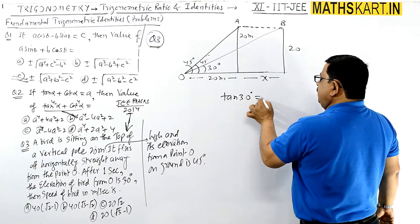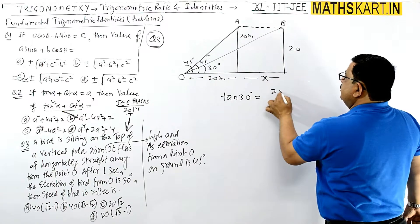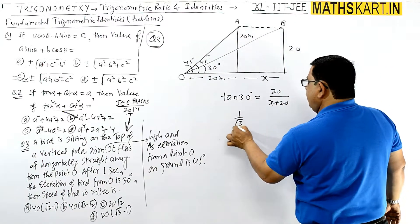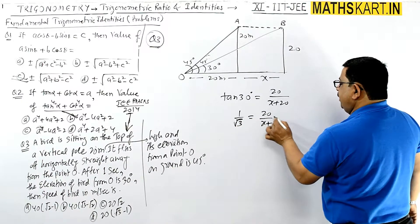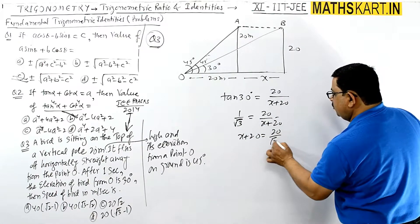Tan 30 aap likh sakte hain, 1 second mein hai. Tan 30 likh ke - tan 30 is perpendicular upon base, that is 20 upon base is x plus 20. So 1 by root 3 equals to 20 upon x plus - this is 20. So you can write x plus 20 equals to 20 root 3.